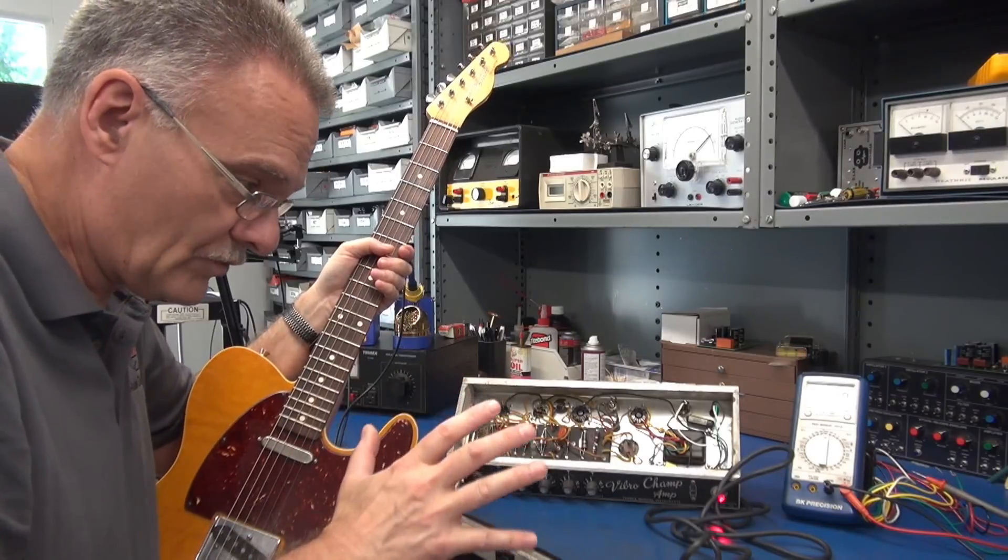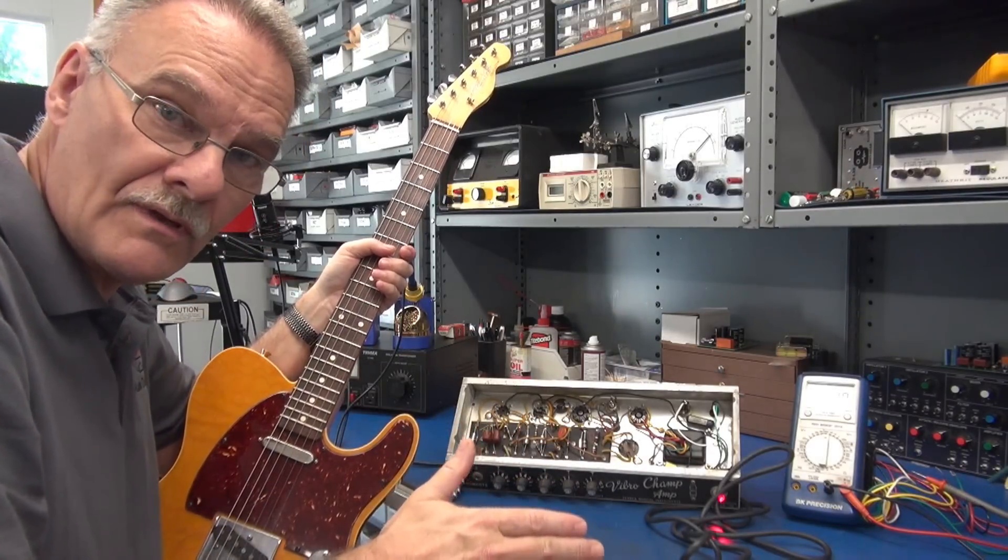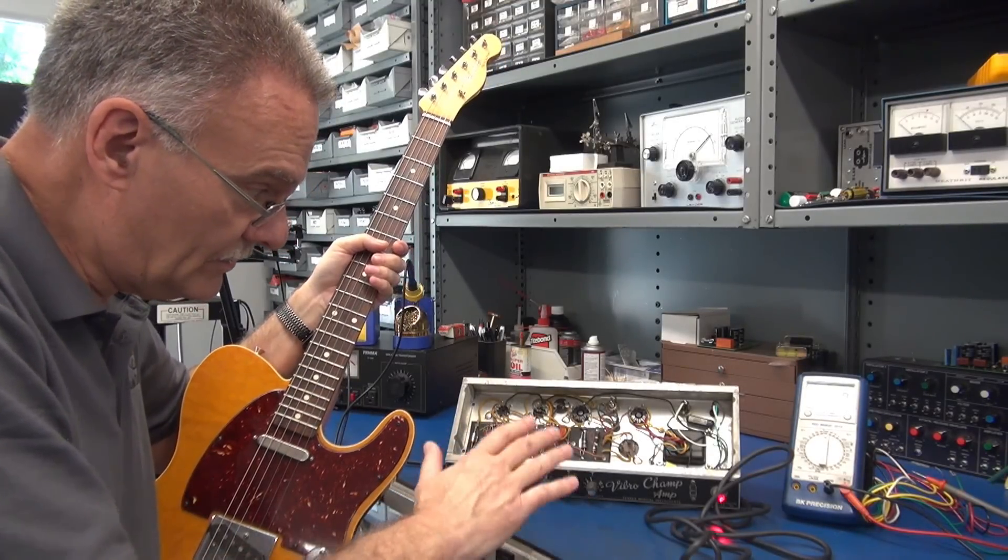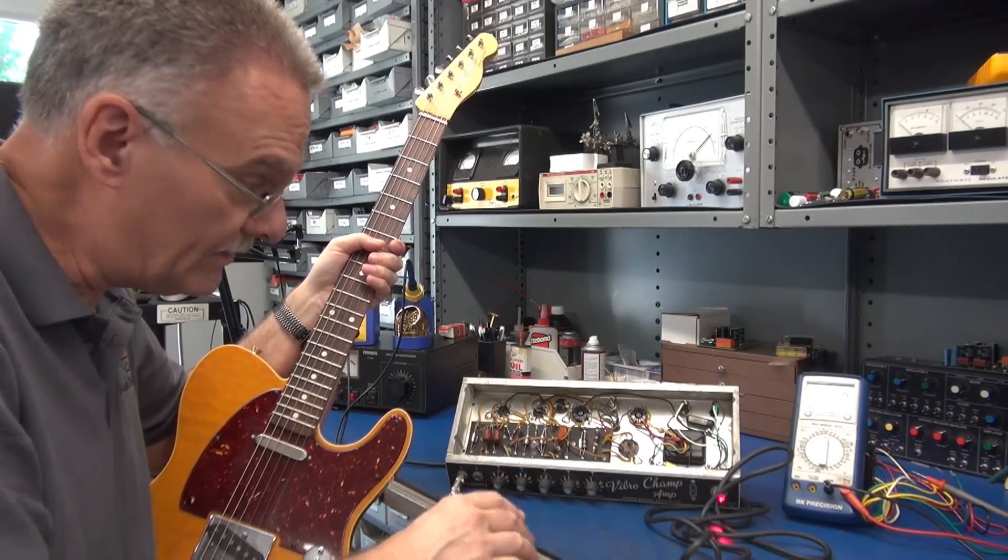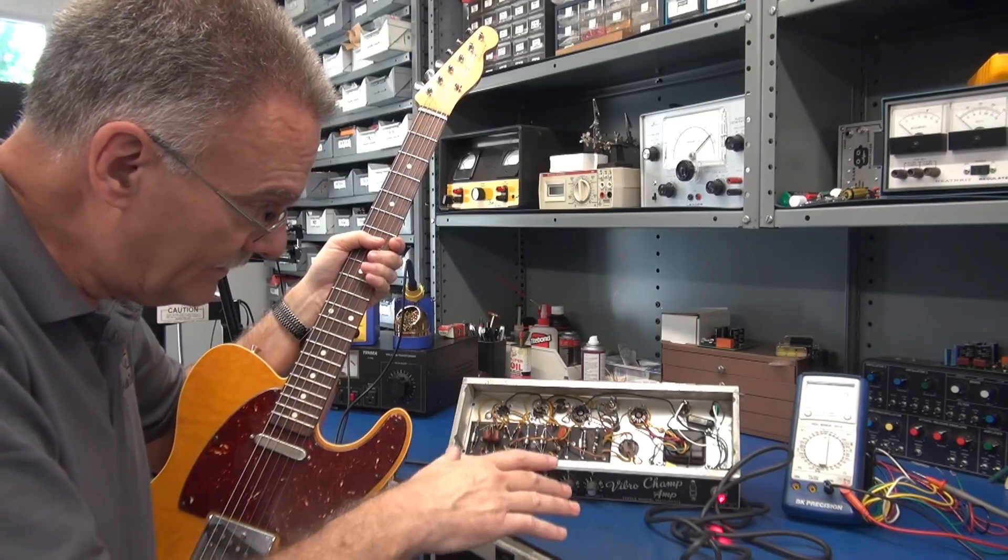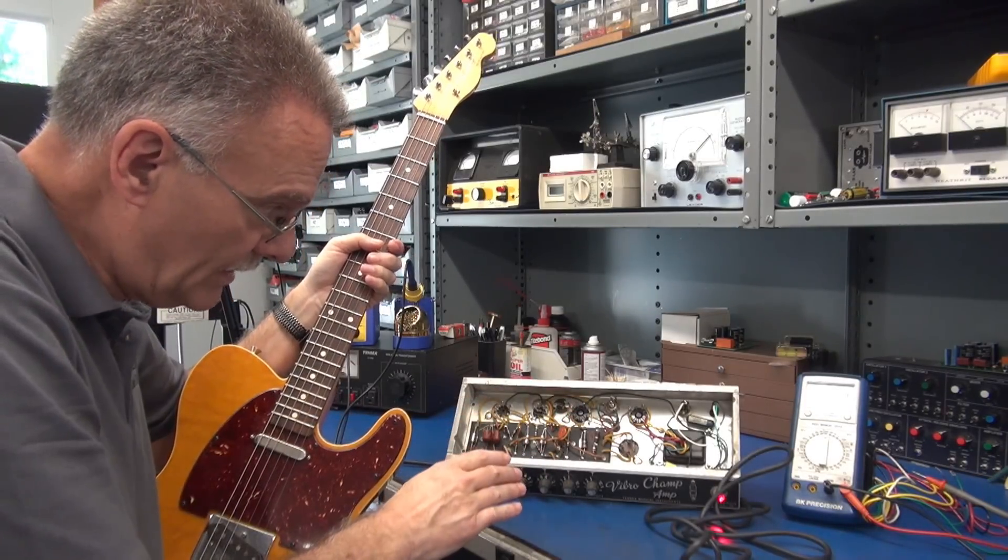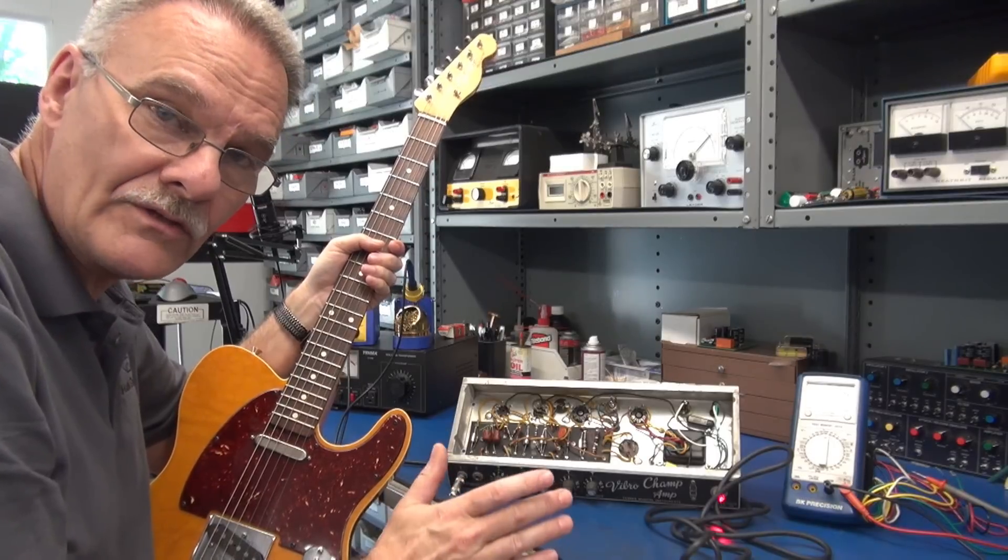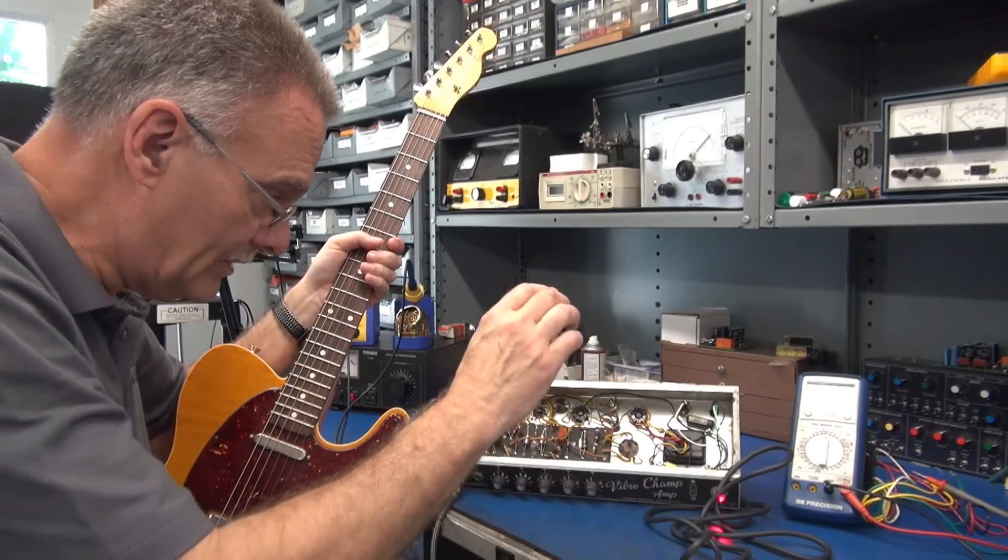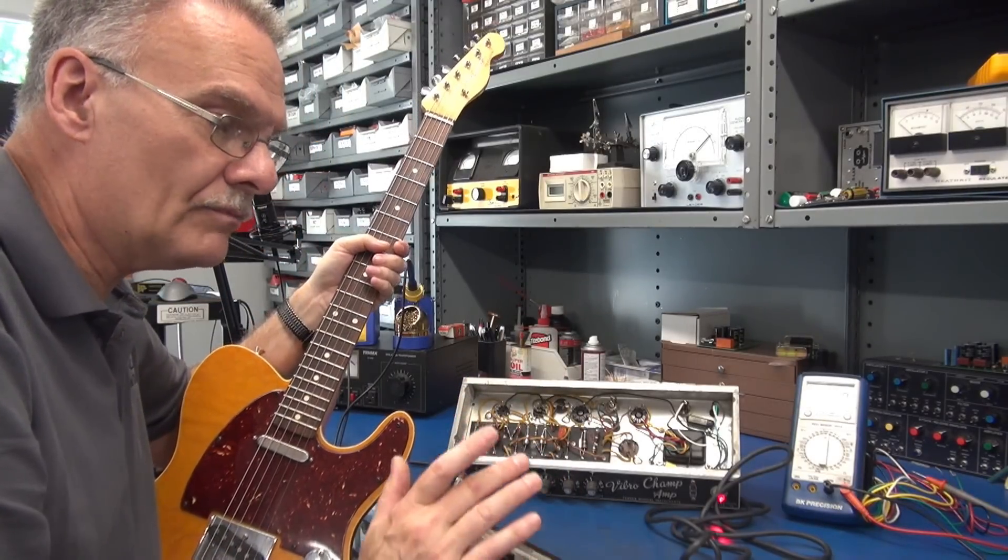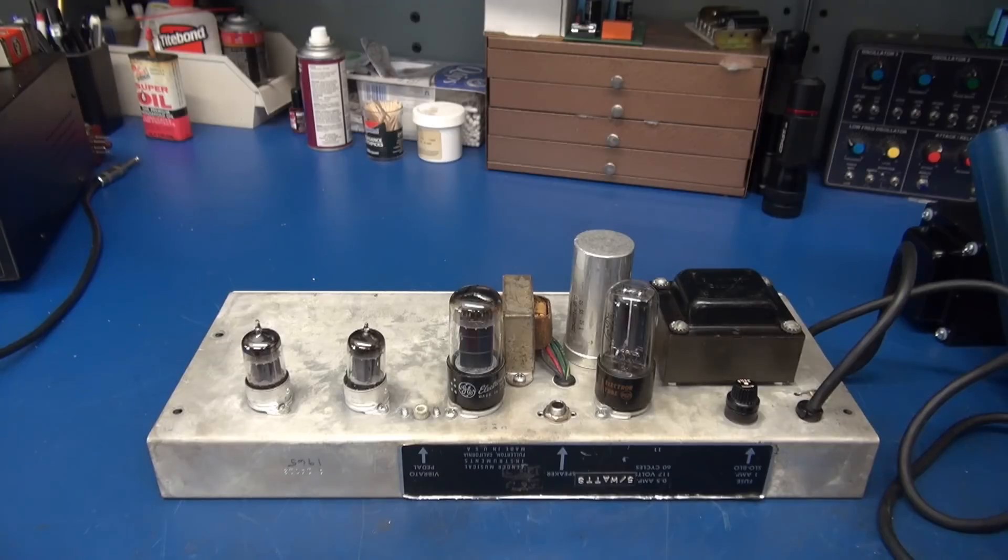So first we'll do a visual inspection as I always do. The big bonus here guys is this is the original owner's amp, it has not been worked on. The only thing that I see that's out of place is the RCA jack for the speaker has been changed with a quarter inch jack but that's no big deal. Alright so let's zoom in here, take a quick look and then we'll move on to power checks.